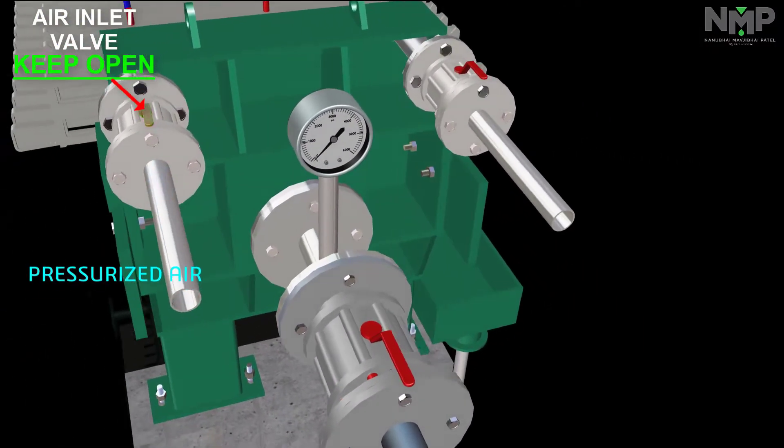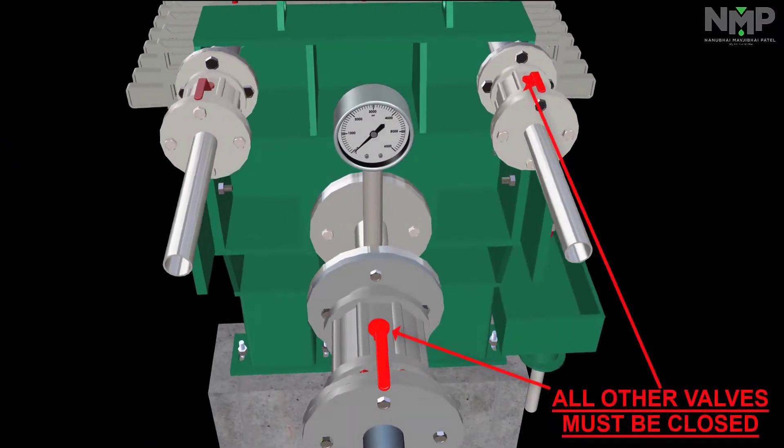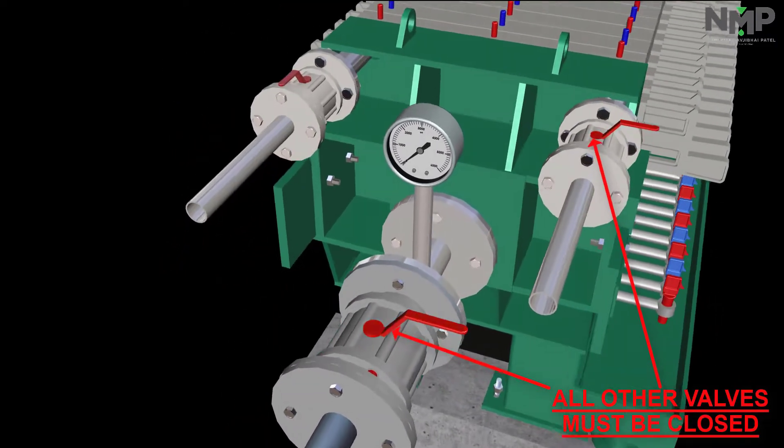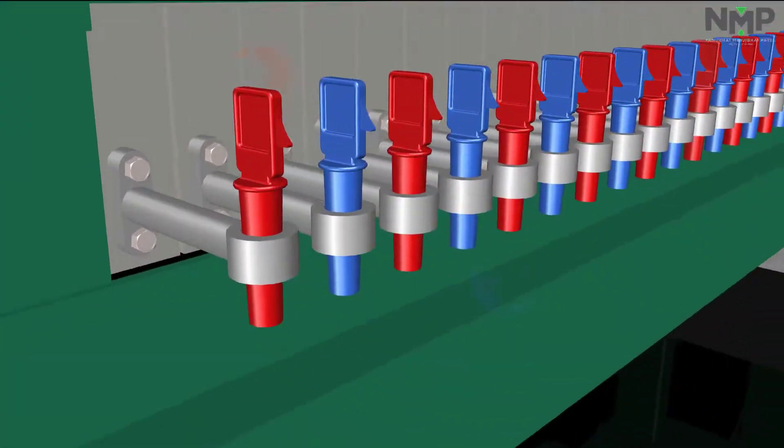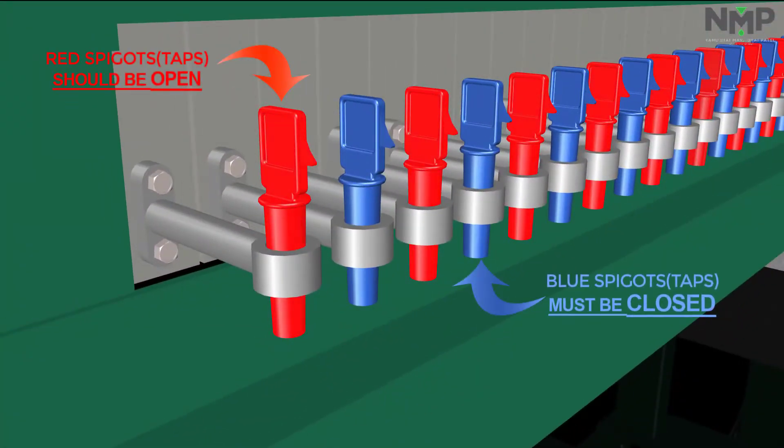In open type of delivery, when we get pressurized air, only air inlet valve and red spigots should be open. All other valves and blue spigots must be closed.